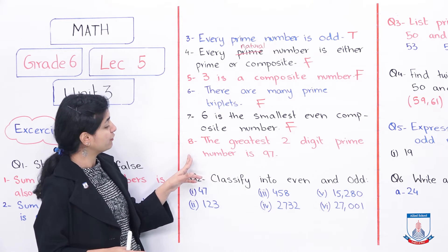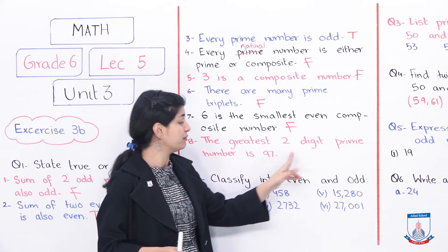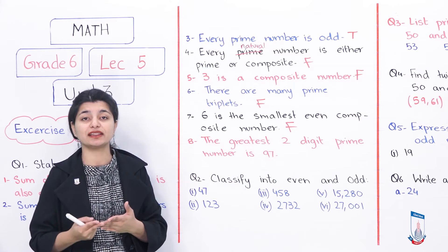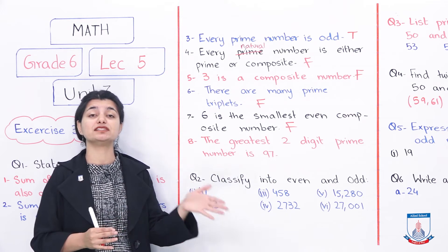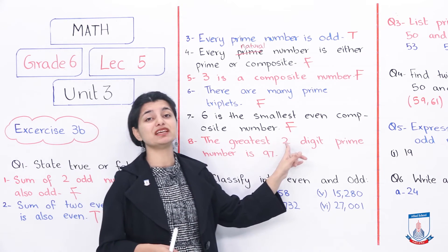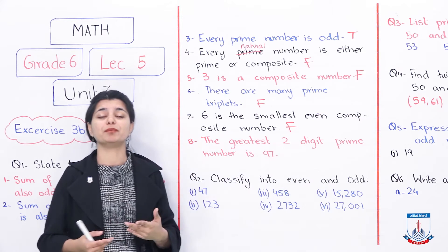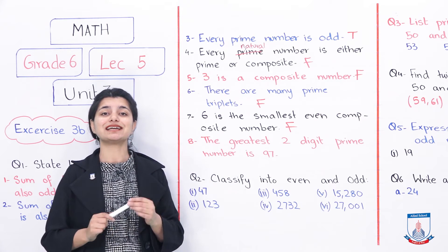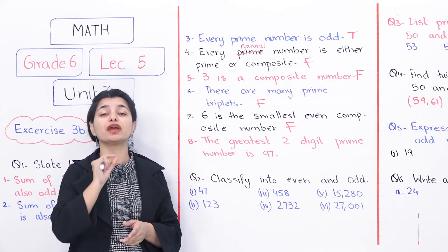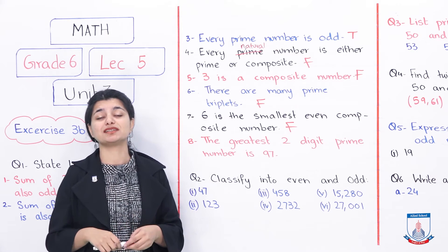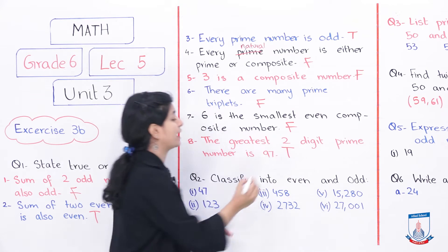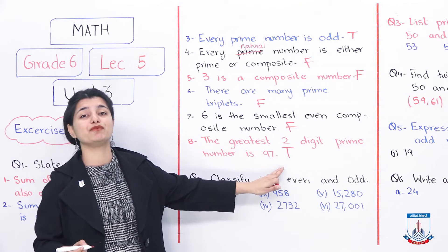The last statement: the greatest two-digit prime number is 97. Two-digit numbers range from 10 to 99. If you look at a prime number table for 1 to 100, the last prime number before 100 is 97. So this statement is true — 97 is the biggest prime number before 100.